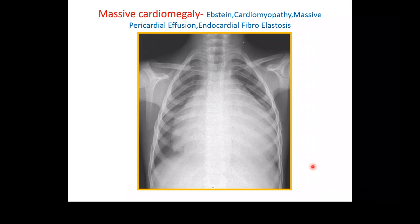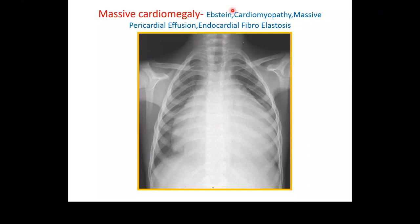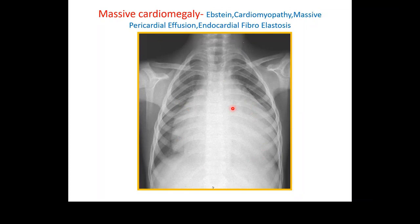A massive heart filling from one thoracic wall to the next — massive cardiomegaly — in a bigger child presenting to the emergency with shortness of breath, chest pain, tachycardia, and tachypnea: the first differential diagnosis should be a massive pericardial effusion requiring early evaluation. Other causes include dilated cardiomyopathy, endocardial fibrosis, or Ebstein's anomaly. In a neonate who is cyanotic with a chest X-ray full of heart and no visible lung — that is a typical feature of neonatal Ebstein's anomaly.